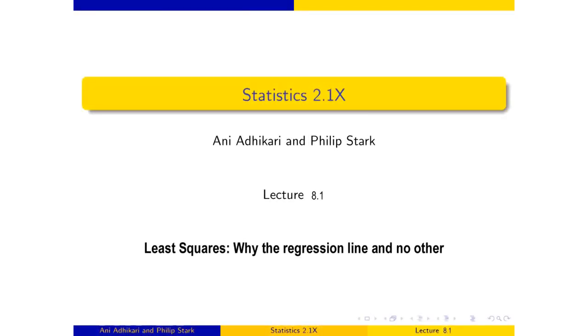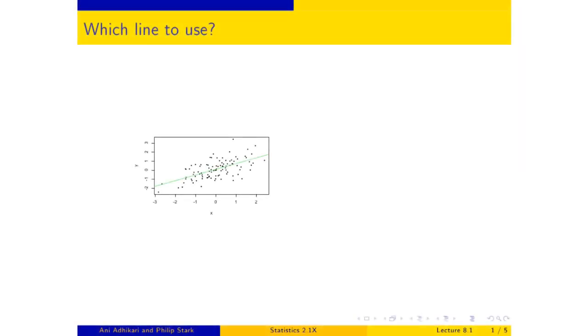It's worth examining more closely why we use the regression line and no other to make our estimates. For the football-shaped scatter diagram, those who like looking at numbers on axes will notice the standard units on both sides. I like working in standard units.